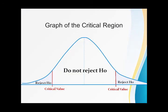The graph of the critical region for two-tailed tests shows the rejection areas on both ends of the curve, the critical values also on both ends of the curve and the acceptance region in the middle. So if it falls at the ends, then you reject the null hypothesis. But if the test statistic falls in the middle, then you do not reject the null hypothesis.